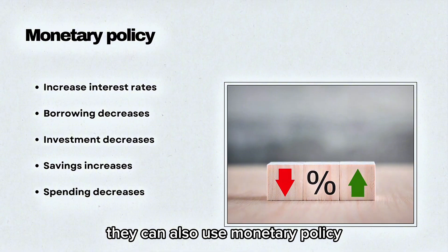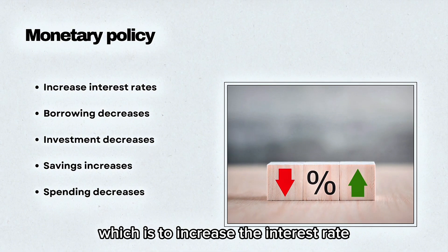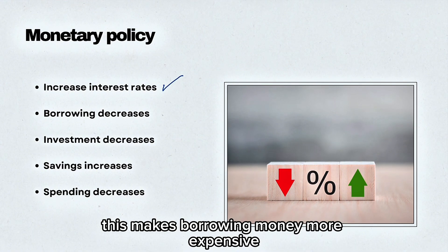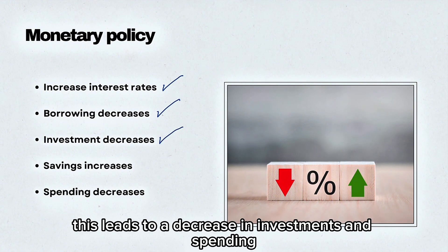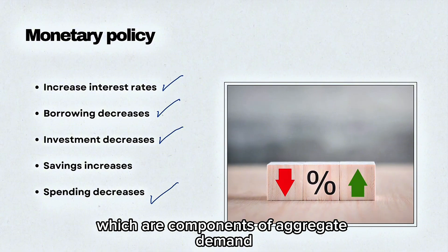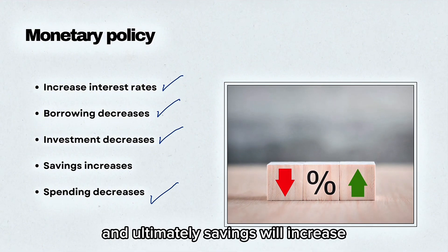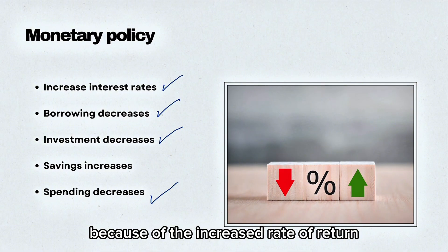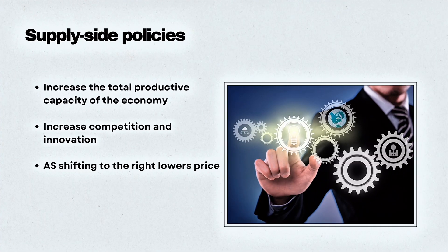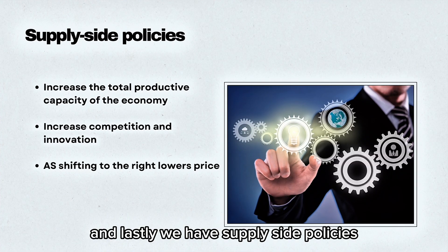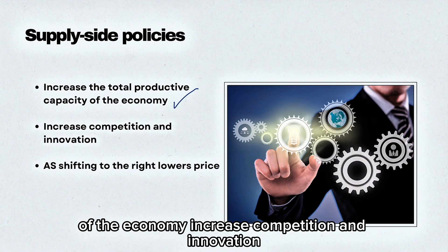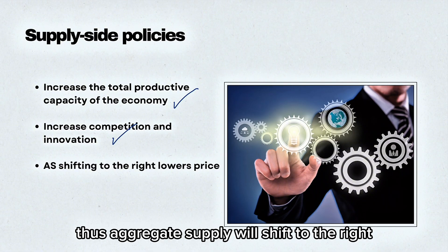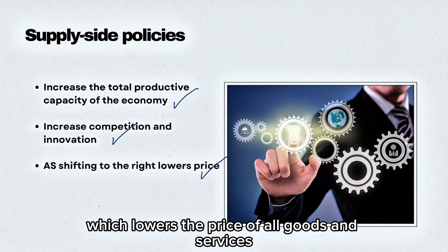They can also use monetary policy by increasing the interest rate. This makes borrowing money more expensive, leading to a decrease in investment and consumer spending — both components of aggregate demand. Savings will also increase due to the higher rate of return. Lastly, supply-side policies can increase the total productive capacity of the economy and encourage competition and innovation, shifting aggregate supply to the right, which lowers the price of all goods and services.